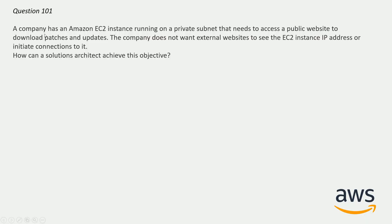A company has an Amazon EC2 instance running on a private subnet that needs to access a public website to download patches and updates. The company does not want external websites to see the EC2 instance IP address or initiate a connection to it. How can a solution architect achieve this objective? Here are the options.